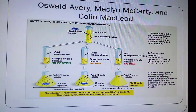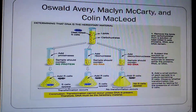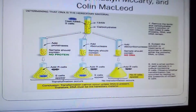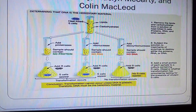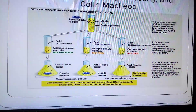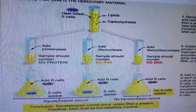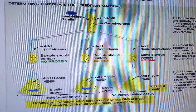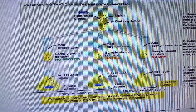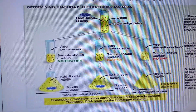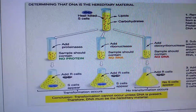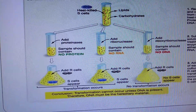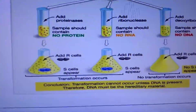They then subjected the solution to enzyme treatments to destroy either the protein, RNA, or DNA separately. A small portion of each sample was added to cultures containing R-cells, and they observed whether transformation occurred by testing for the presence of virulent S-cells. The heat-killed S-cell solution was divided into four test tubes: one treated with proteinase, one with ribonuclease, and one with deoxyribonuclease, leaving samples with no protein, no RNA, or no DNA respectively.